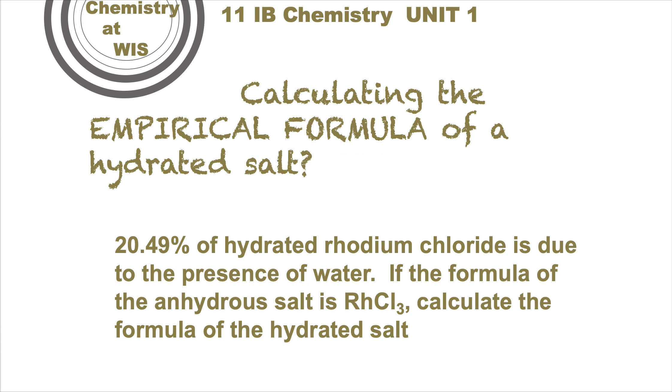Here's some calculations. We've got rhodium trichloride, and 20.49% in this particular compound is due to the presence of water. So a fifth of the mass of the hydrated salt is water. How are you going to calculate the actual formula, RhCl3.xH2O? How many molecules x of water have you got?